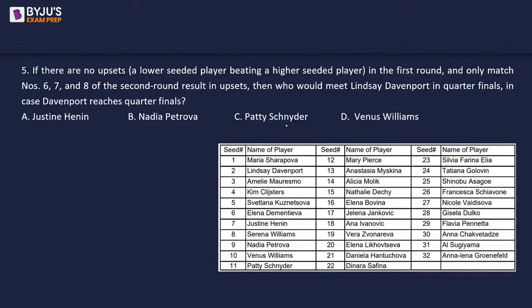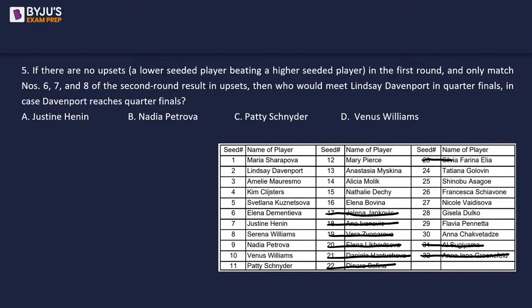Question 1: If there are no upsets in the first round and only matches 6, 7, and 8 of the second round result in upsets — if no upsets occur in the first round, seeds 1 through 16 all advance. In round 2, match 1 is not an upset, match 2 is not an upset — continuing until match 6, 7, and 8 are upsets. At match 6, the lower seed beats the higher seed, so the top seed of that match exits.